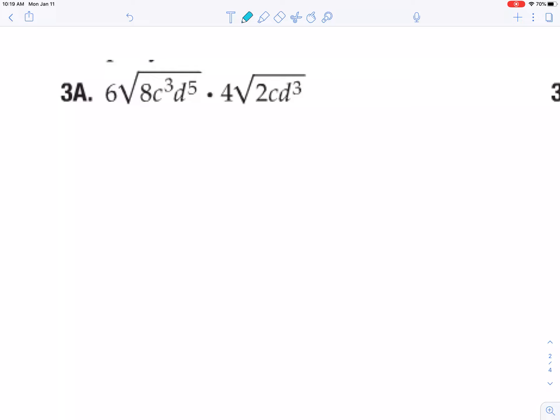Whatever's on the outside of the radical sign, multiply that stuff together. So I have a 6 and a 4. Go ahead and multiply those together. That's 24.